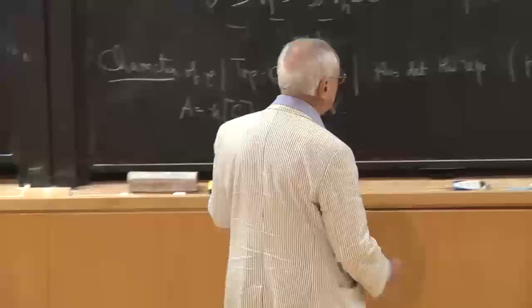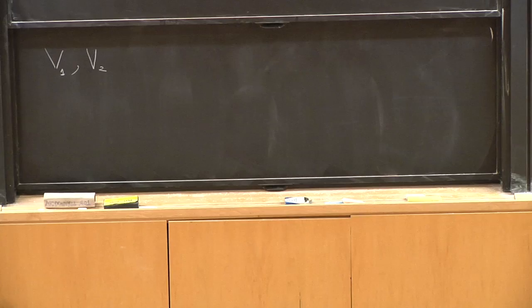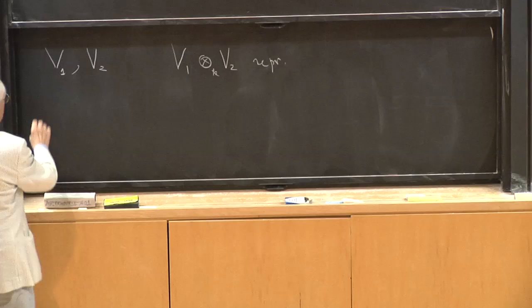The following question comes in a natural way: if you have V1 and V2, two representations, you can of course form the tensor product over K, and then you have the theorem of Chevalley — roughly 1950.